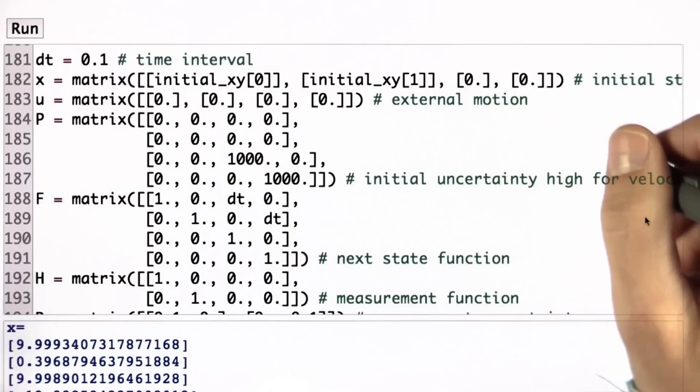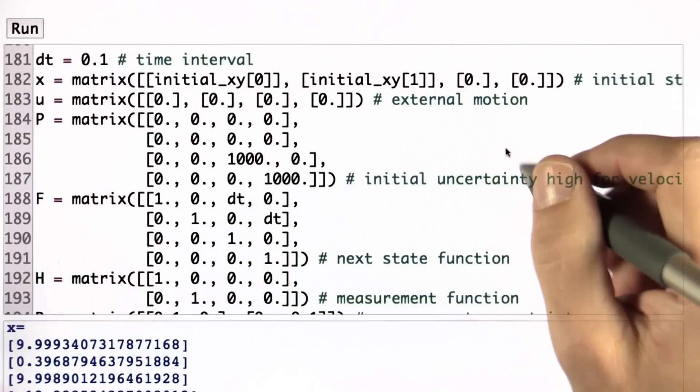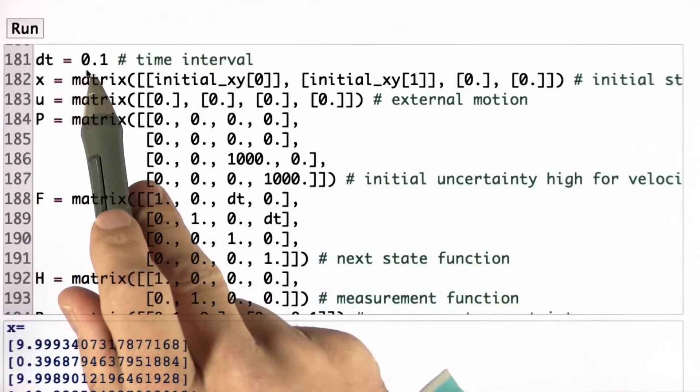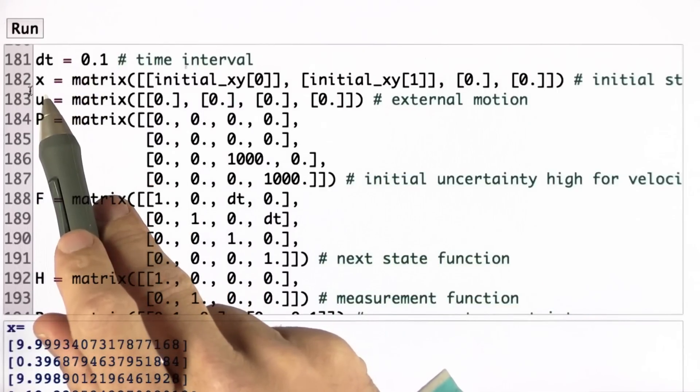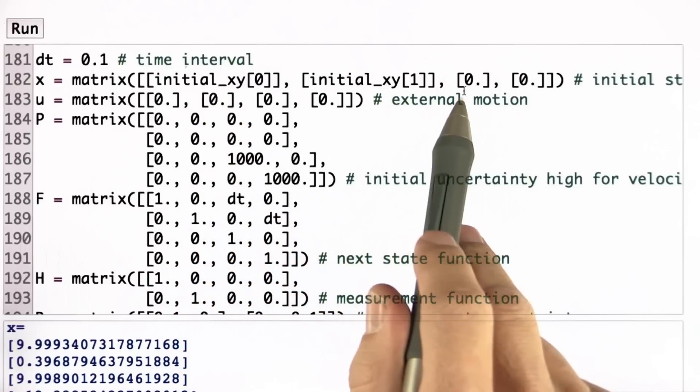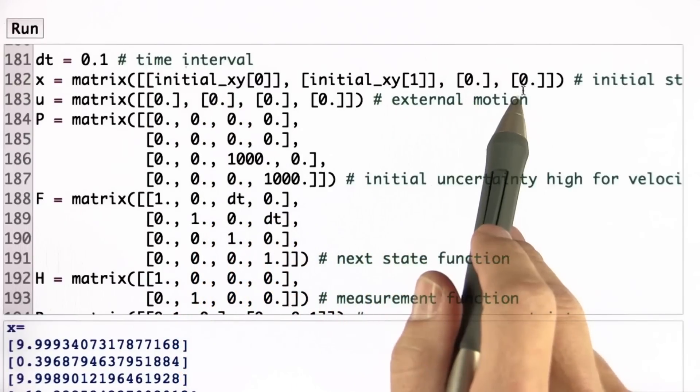So here's my solution for the programming assignment, and there's many different ways to structure this, but that's what I've done. I have a dt equals 0.1. I set my initial state vector to be the initial x and y coordinates, and for the two velocities, I set them both to 0.